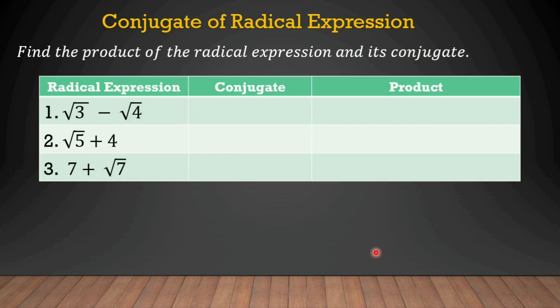Find the product of the radical expression and its conjugate. When we say conjugate, we just change the sign. So, the conjugate of an expression — if it is minus, the conjugate is plus. And if the radical expression is plus, the conjugate is minus. That's how easy it is to find the conjugate.